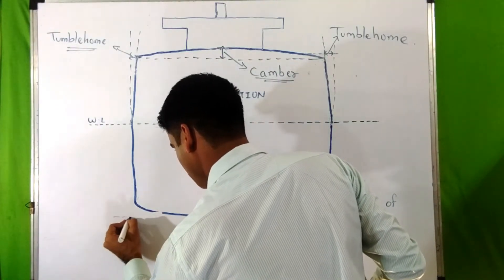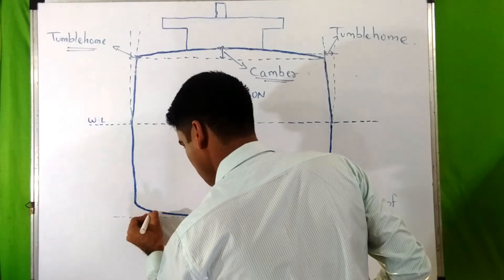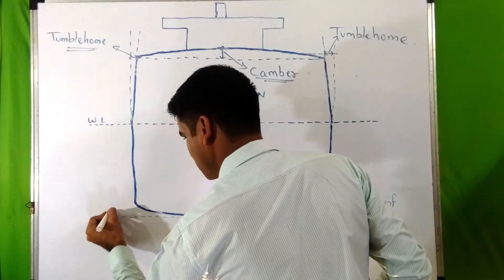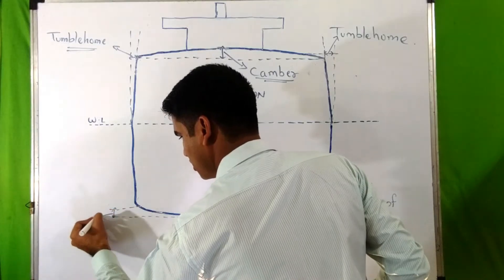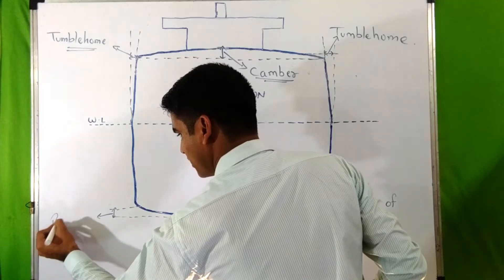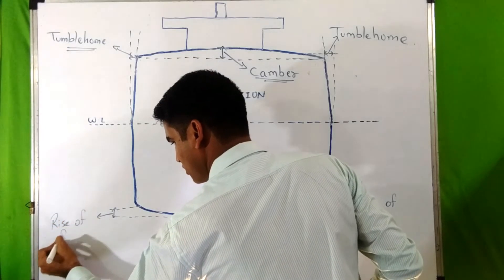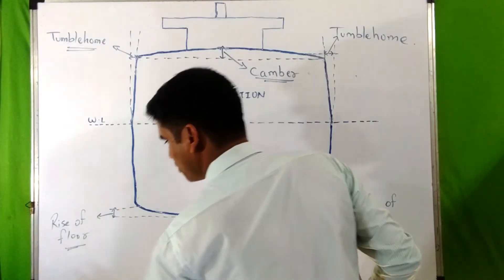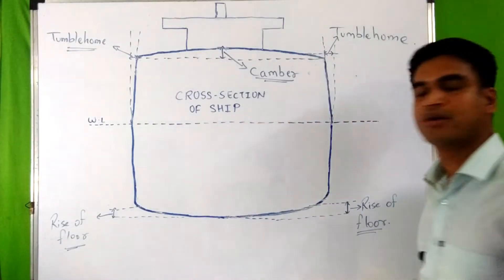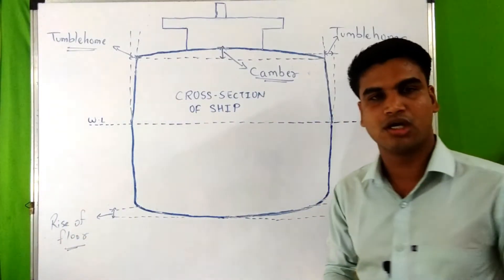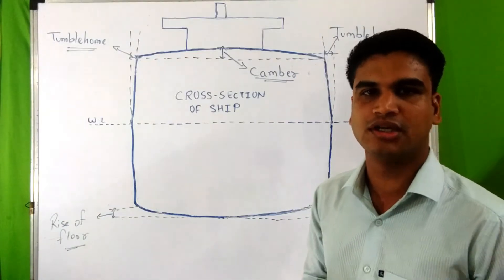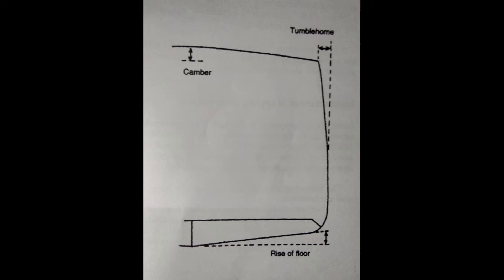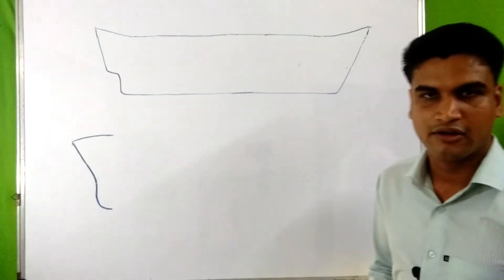Rise of floor is actually provided to drain the liquid from the ballast water in the double bottom tank. Rise of floor is provided to drain the ballast water in the double bottom tank towards the centerline or towards the tank suction.